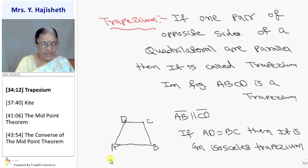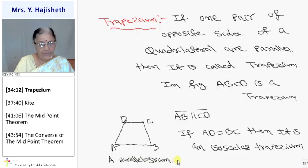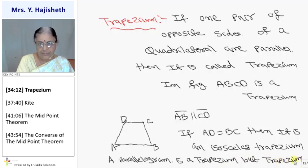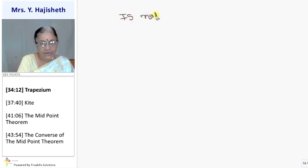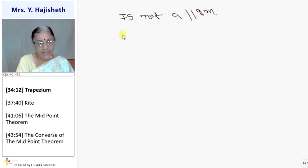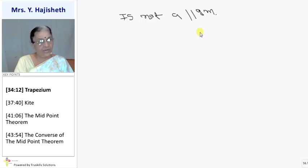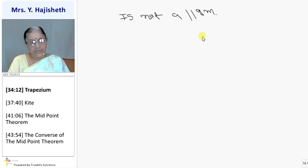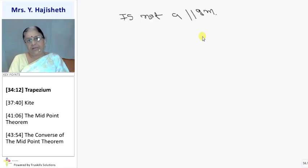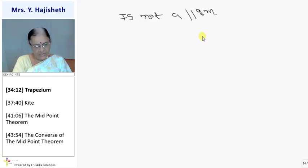A parallelogram is a trapezium (since both pairs of opposite sides are parallel), but a trapezium is not necessarily a parallelogram. So square, rectangle, and rhombus are all parallelograms, but a parallelogram is neither a square, nor a rectangle, nor a rhombus. However, a parallelogram is a trapezium, but a trapezium is not necessarily a parallelogram.